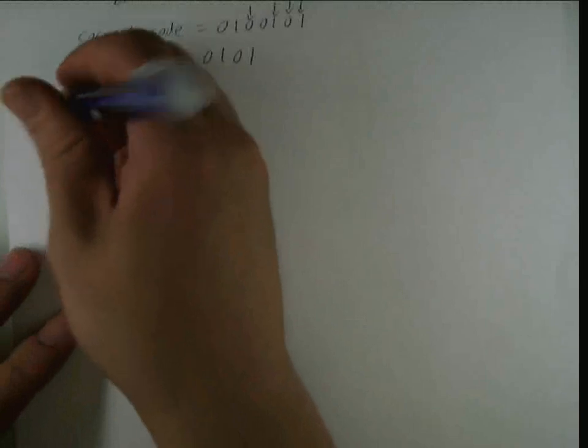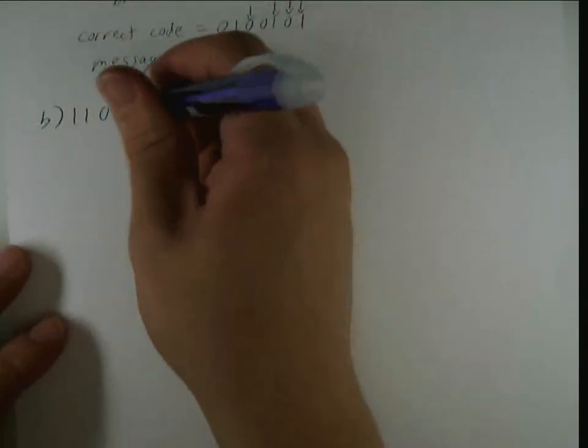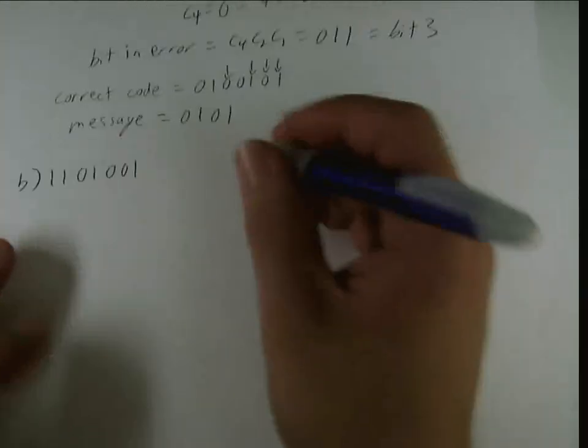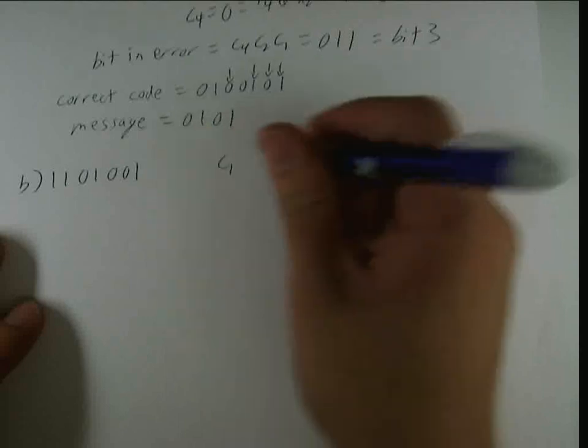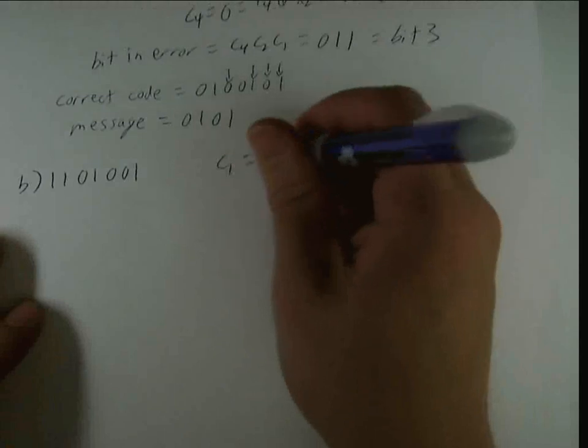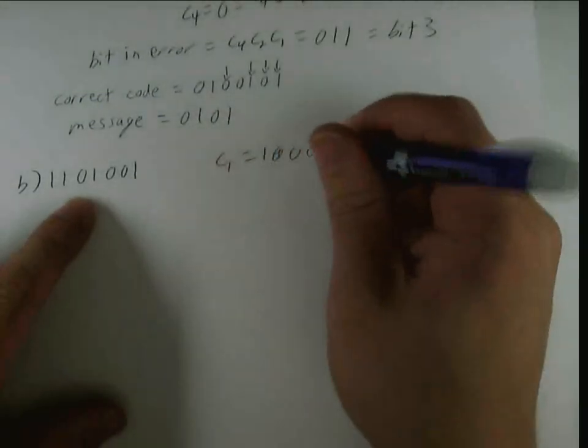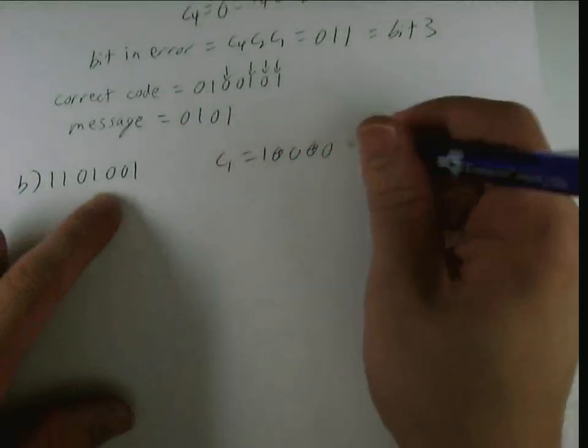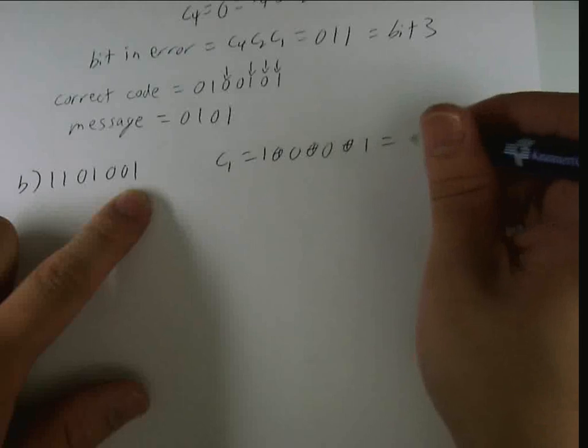So, part B. We have 1, 1, 0, 1, 0, 0, 1. And, we're just going to go through this a little bit faster. c1 is going to equal, I'm just going to write down, 1, xor 0, xor 0, xor 1, which is equal to 0.